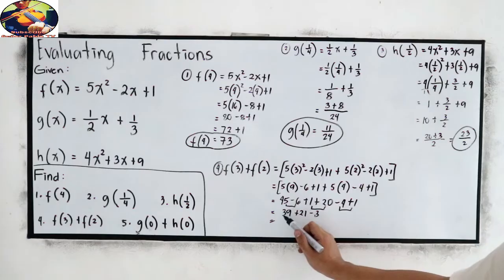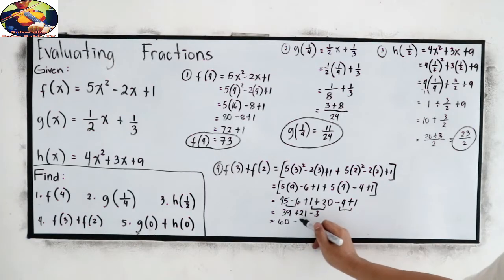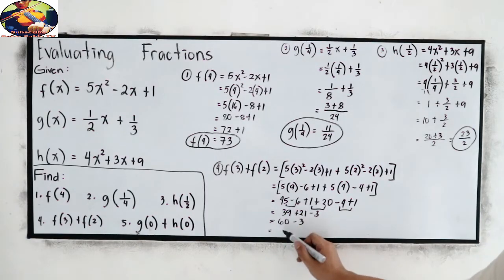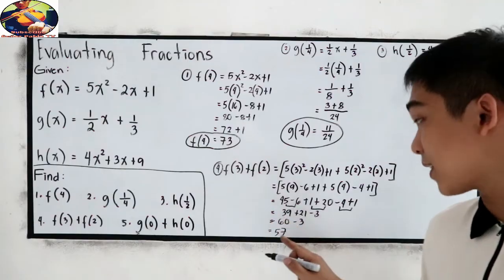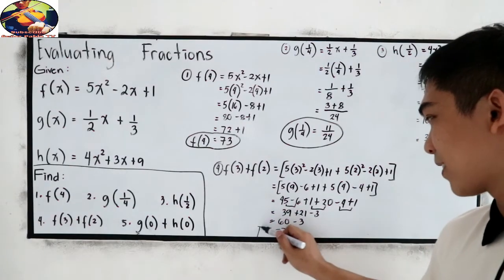Now, we have 39 plus 21. This is 60. Minus 3. The final answer is 57. So, f of 3 plus f of 2 is 57. That's it.